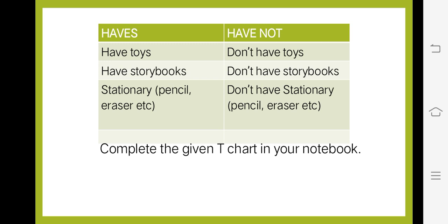'Have' is for rich children and 'Have Not' is for poor children. For example: rich children have toys and poor children don't have toys. Rich children have story books and poor children don't. Rich children have stationery — pencil, eraser, etc. — and poor children don't have stationery.